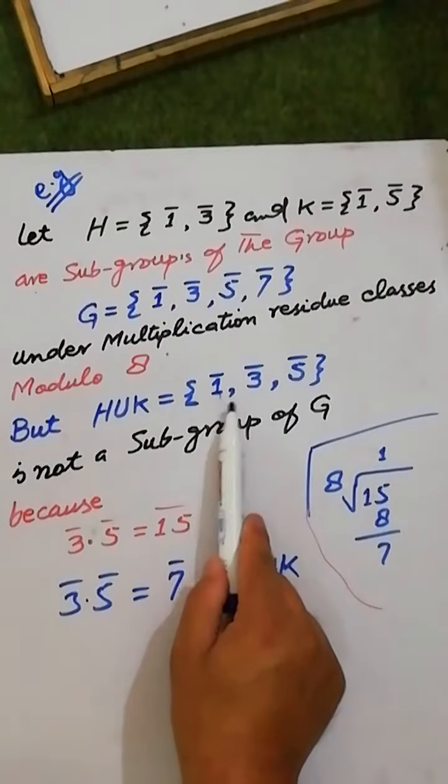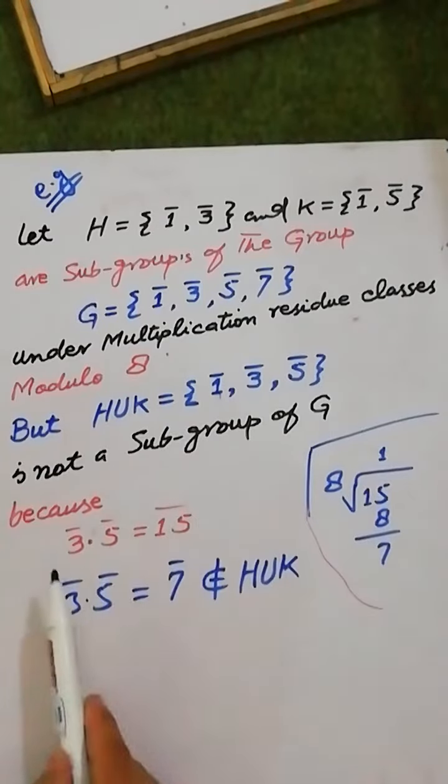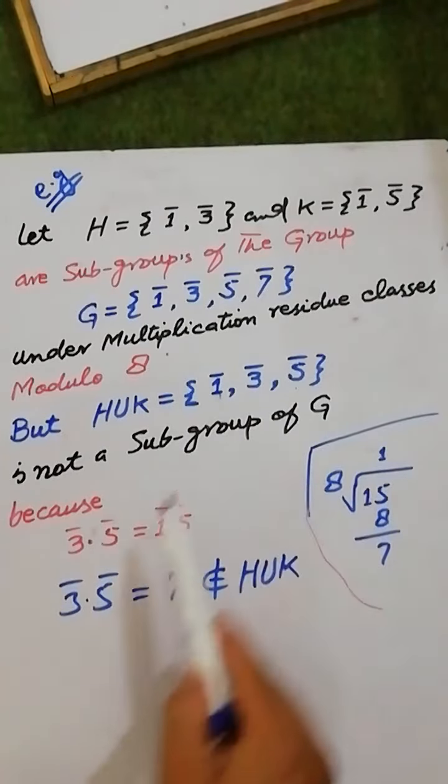and K is the set {1, 3, 5}, which is not a subgroup of G because when we operate element 3 with element 5